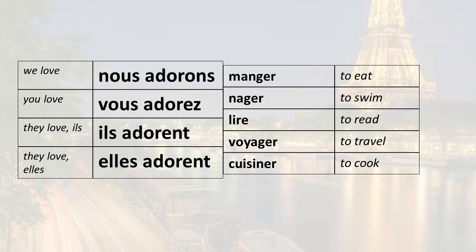What we're going to do now is learn how to ask questions with inversion. Remember, with inversion the verb form is first, followed by the subject pronoun. So nous adorons would become adorons-nous. Vous adorez becomes adorez-vous. Ils adorent becomes adorent-ils. Elles adorent becomes adorent-elles.